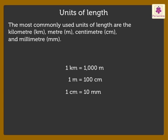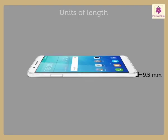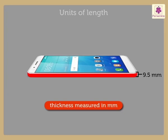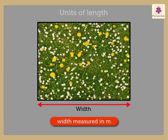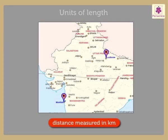These units are used to measure different things, such as: The thickness of a cell phone is measured in millimetres. The width of a garden is measured in metres. The width of a book is measured in centimetres. The distance between two cities is measured in kilometres.